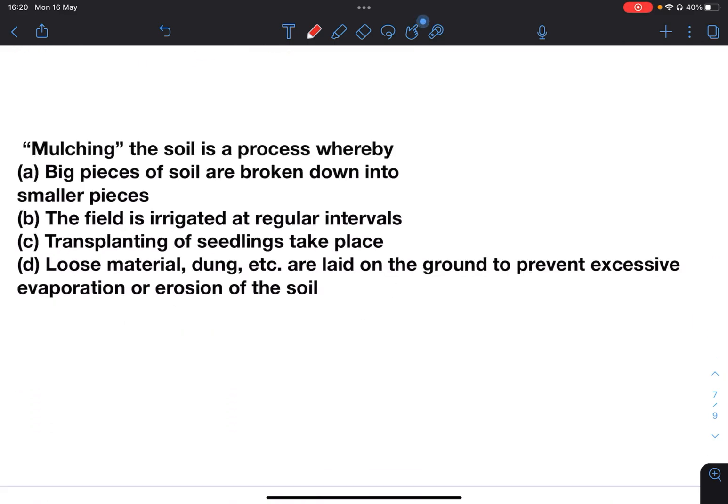Next: Mulching the soil is a process whereby big pieces of soil are broken down into smaller pieces, the field is irrigated at regular intervals, transplanting of seedlings takes place, or loose materials like dung are laid on the ground to prevent excessive evaporation or erosion of the soil. Answer will be D. You must read about types of irrigation systems and cropping systems. These questions are asked repeatedly.